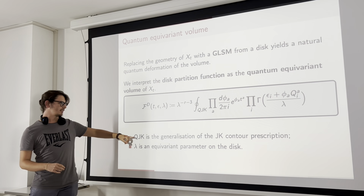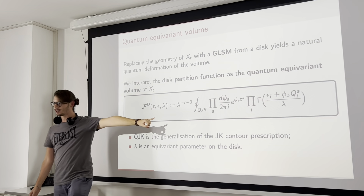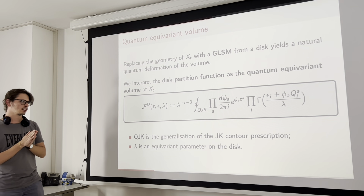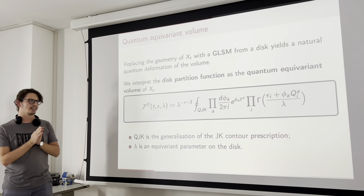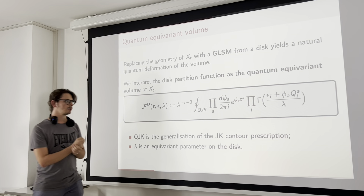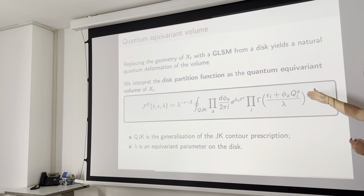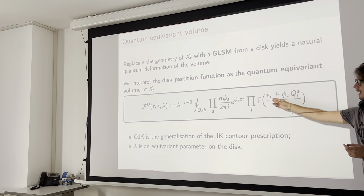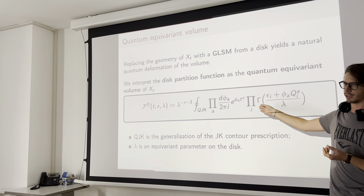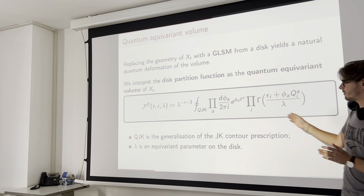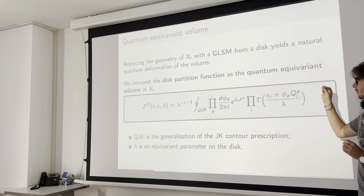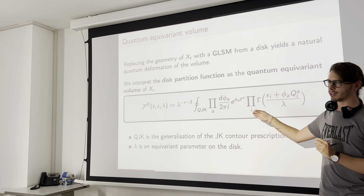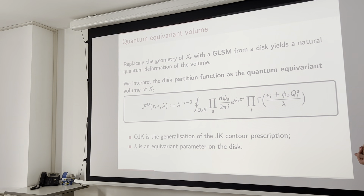Our contour is now called the quantum Jeffrey-Kirwan prescription, which is a generalization of the classical one. Before we had simple poles at the denominators; now, gamma functions have infinite towers of simple poles. We call one the classical pole (when the argument goes to zero), which was the one in the classical JK prescription. The quantum JK prescription states: if the classical pole belongs to the JK set, then both the classical pole and the infinite tower of poles belong to the quantum JK prescription — and vice versa.